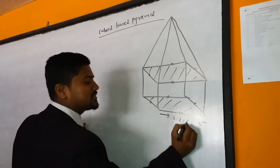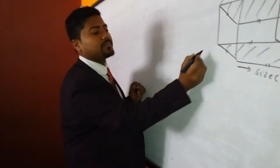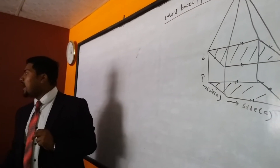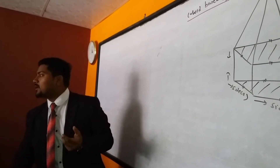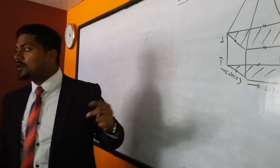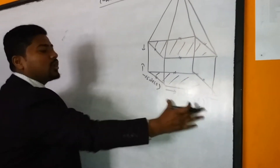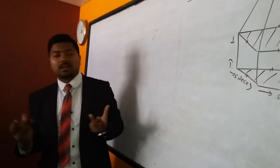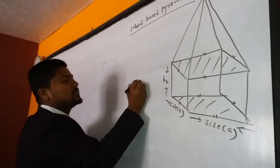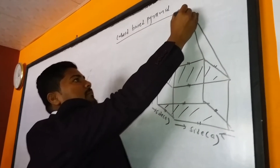The side of the base is called 'a'. Length, breadth — all are equal, so each side is 'a'. The height of the cuboid is denoted by S2, and the height of the pyramid is denoted by S1. So: length of cuboid = a, breadth = a (square base), and height of cuboid = S2.